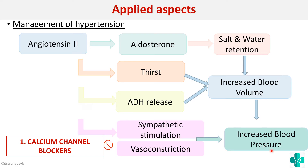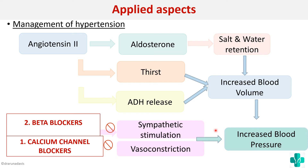The second mechanism is to decrease sympathetic stimulation by giving beta blockers, which will reduce blood pressure. The third mechanism is giving diuretics — substances that cause increased excretion of water — so that blood volume decreases and blood pressure decreases as a result.